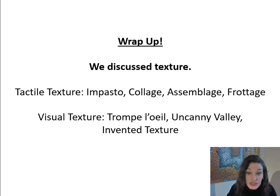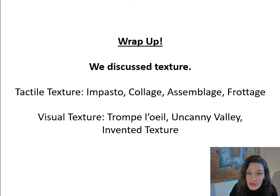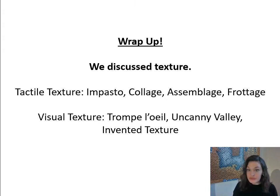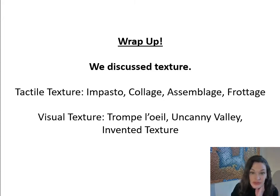Let's wrap up this discussion of texture before we get into movement. To recap: we talked about tactile texture — texture we can actually feel — and different media that incorporate it, such as impasto (thick paint), collage (flat on flat), assemblage (3D onto 2D), and frottage (rubbings). We also talked about visual texture: trompe l'oeil (painting that looks realistic), uncanny valley (computer-generated work that looks like a photograph), and a variety of invented textures.